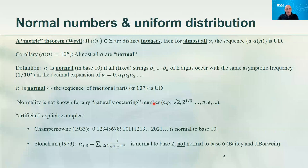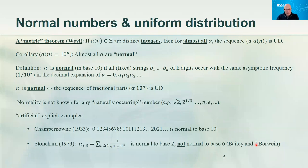There are explicit examples provably normal for one base. Champernowne — I believe when he was a high school student or undergraduate — wrote down the number formed by concatenating all base-10 expansions of consecutive integers: 0.123456789101112... This can be proved normal to base 10, but it's not known to be normal in any other base. There is also an example due to Stoneham which is normal to base 2 but was proven not to be normal to base 6.